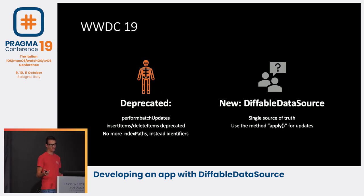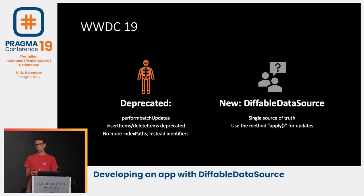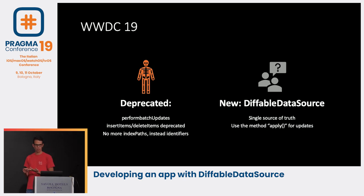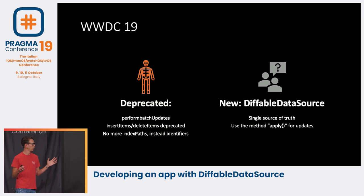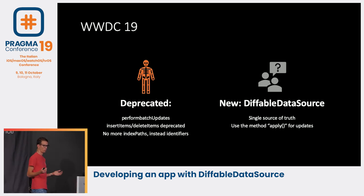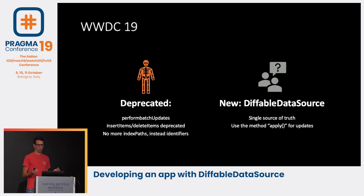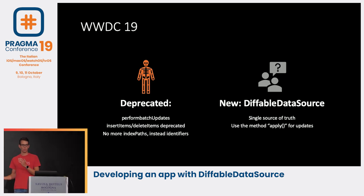What they announced is that performBatchUpdates is now deprecated. There are no more insertion and deletion calls with index paths. Instead we have identifiers. With the new Diffable Data Source, we'll have a single source of truth, and we only use the method apply to transform our animations.